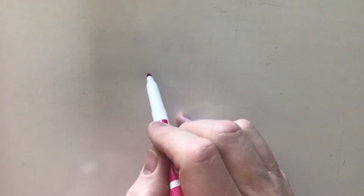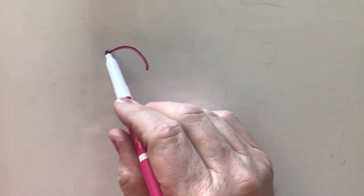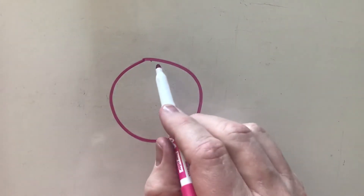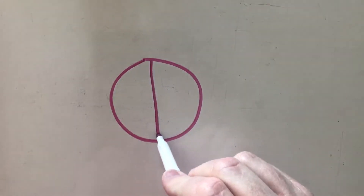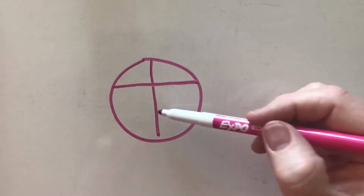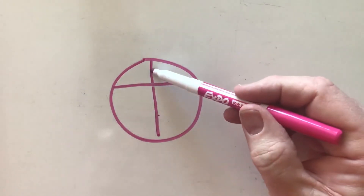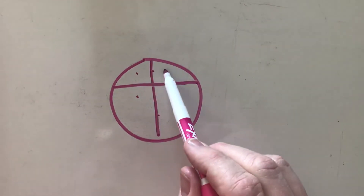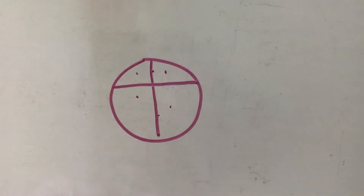Now if we were to look from the top of the heart, it would look something like this. If we cut it, we'd see the ventricular septum, the atrial septum, the right atrium, the right ventricle, the left atrium, and the left ventricle.